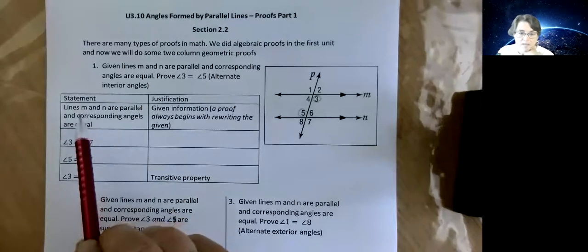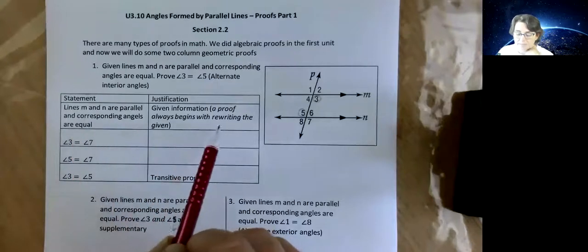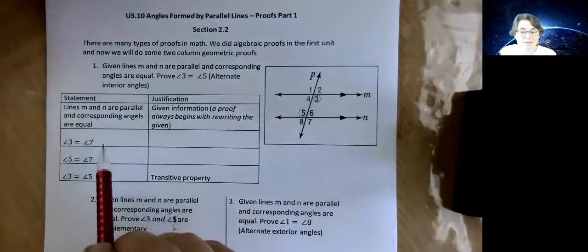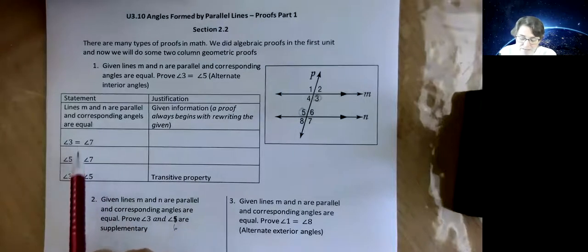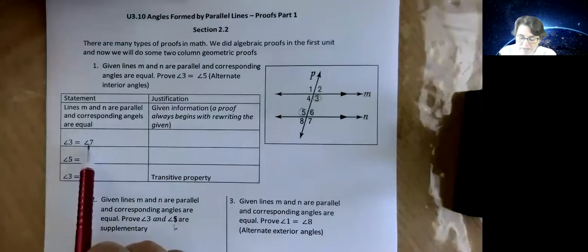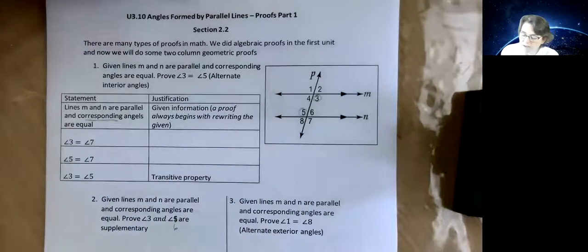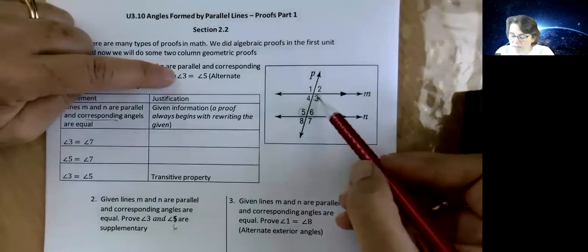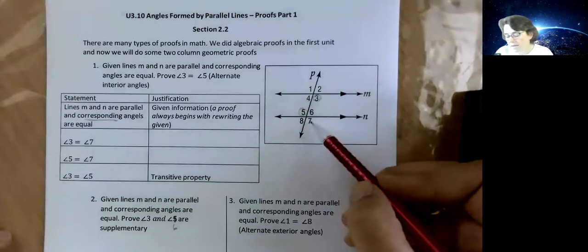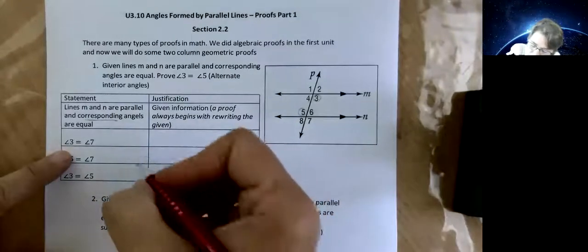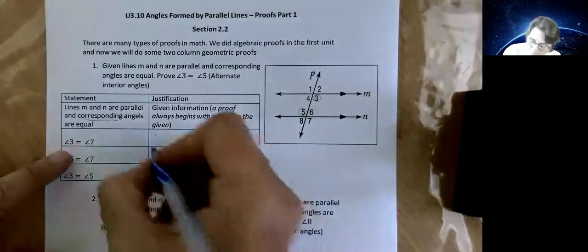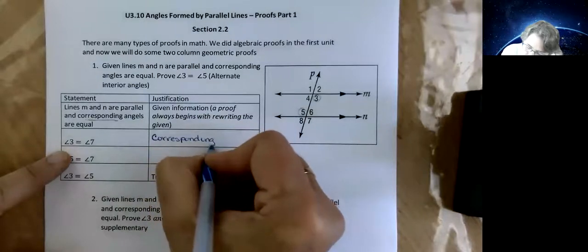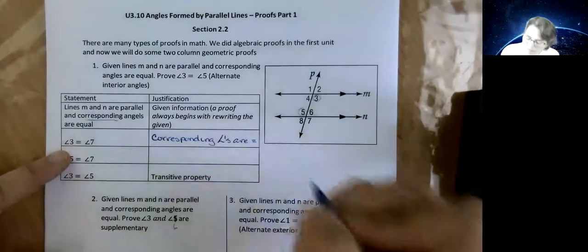So they always start out by re-writing out what is the given. That's just how they start. And then you make your statement. So this one I've given you kind of an outline on how to do it. So angle 3 is equal to angle 7. Now the fact you're talking about corresponding angles usually tells you hint, and we want to prove 3 and 5. So if we start with 3, and we look down here, 3 and 7 are corresponding angles.